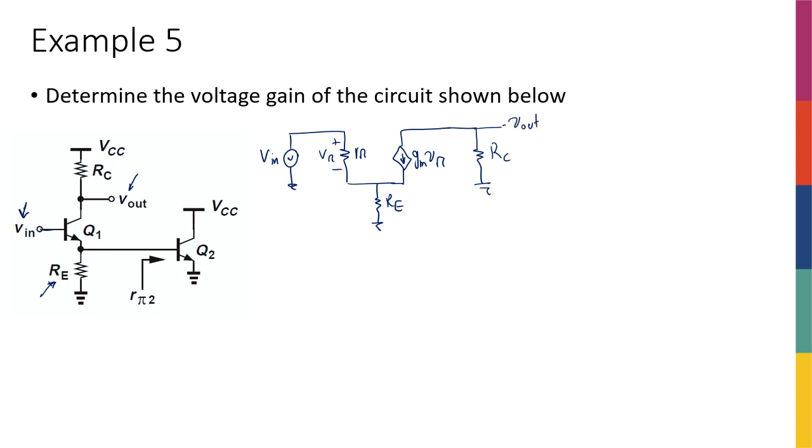How about the second transistor? Well, that's connected to the emitter, so from here, I'm going to have another Rpi. I'm going to call it Rpi2. So this is going to be Rpi1, Vpi1, GM1, Vpi1, and then I have Rpi2.